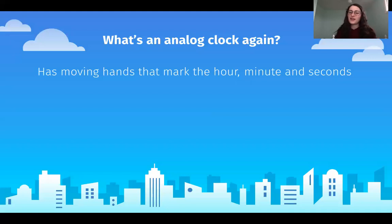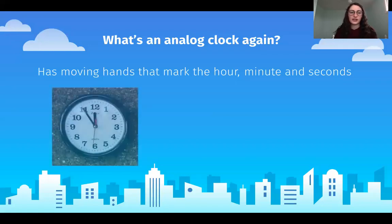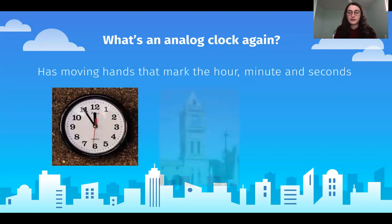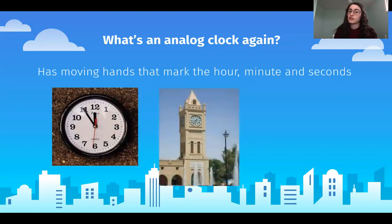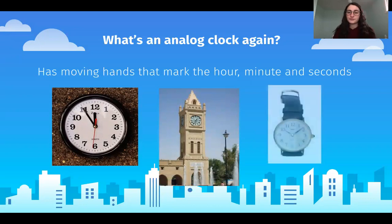So what is an analog clock? It has moving hands that mark the hour, minute, and seconds. It is just like the clocks that we have in our classroom — maybe you have one at home; I have one in my kitchen. You also see them on a clock tower and on a watch.